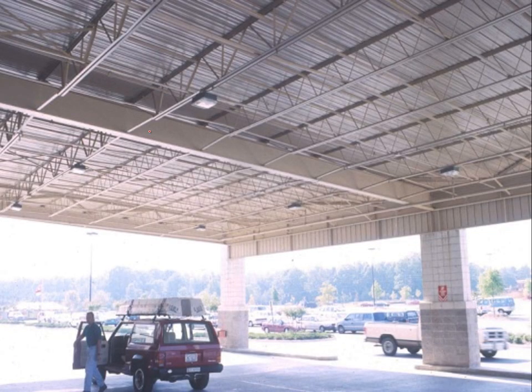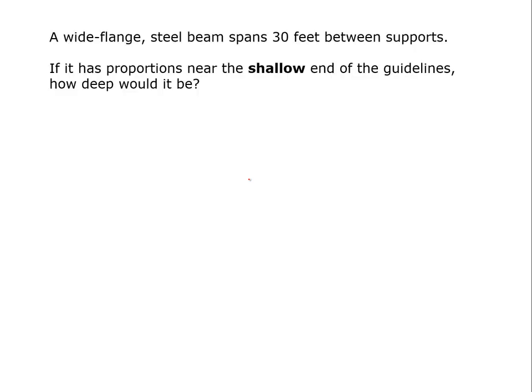But I want you to get familiar with how you sort of manipulate them and thereby understand them more effectively. And we'll begin by looking at basically this item right here which is a wide flange steel beam, and we're going to look at some of the spans and proportions for that. So we're going to ask a question such as a wide flange steel beam spans 30 feet between supports, so it's what we call a simple span beam. If it has proportions near the shallow end of the guidelines, how deep would it be?